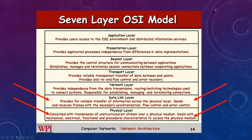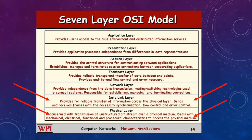Here are the seven layers for review. We're concerned mostly with the physical layer and data link layer. The physical layer is concerned with transmission of an unstructured bitstream over a physical medium — dealing with the mechanical, electrical, functional, and procedural characteristics to access the physical medium. The data link layer provides reliable transfer of information across the physical layer, sends and receives frames with the necessary synchronization.